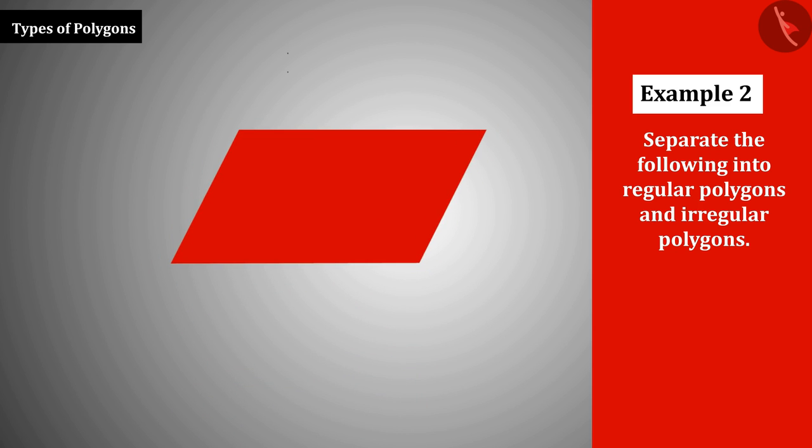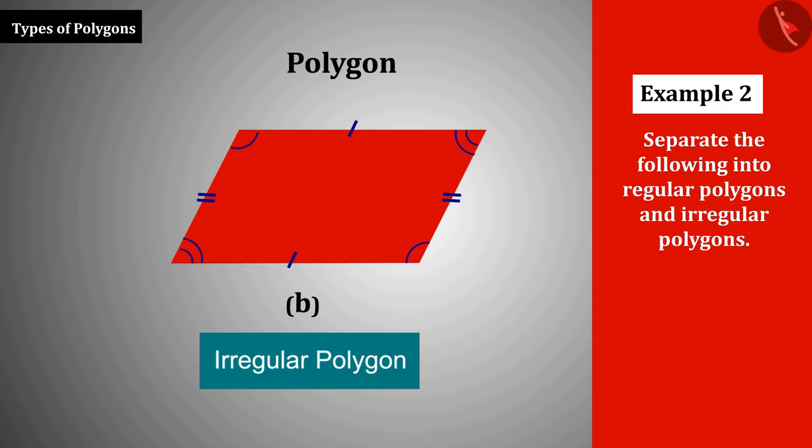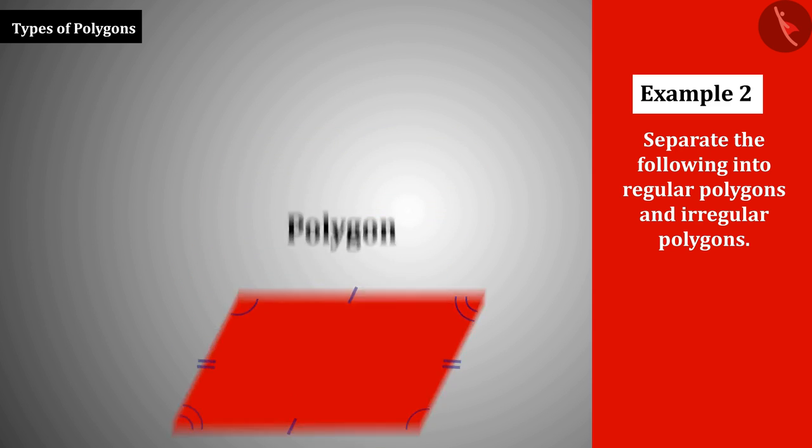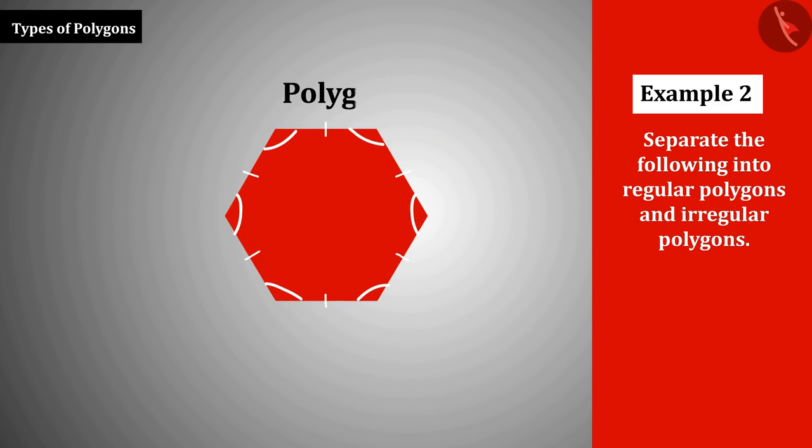Similarly, we can put polygon B in the category of irregular polygons. In polygon C, the marks on all the sides indicate that the measurement of all the sides are equal, and the marks on all the angles show that